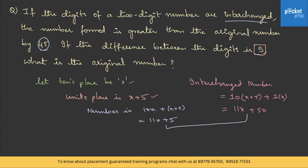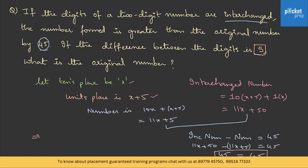The difference between the interchanged number and the original should be 45: (11x + 50) - (11x + 5) = 45, which gives 45 = 45. The x terms are eliminated, so we cannot determine x. Therefore the number cannot be determined — the data is insufficient to solve this question. That's the end for problems on numbers.